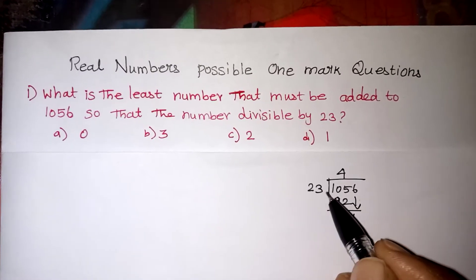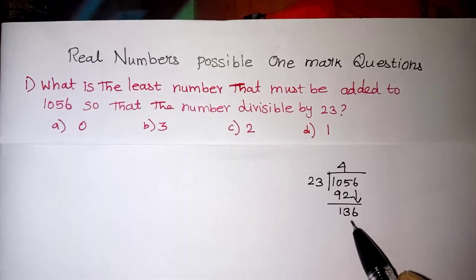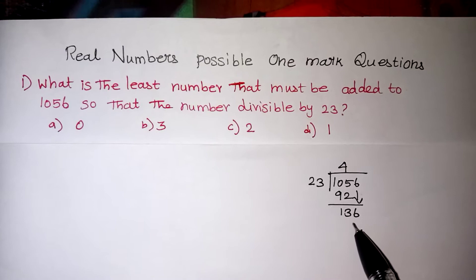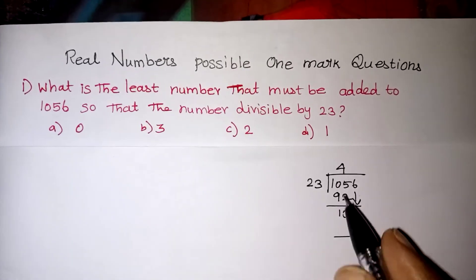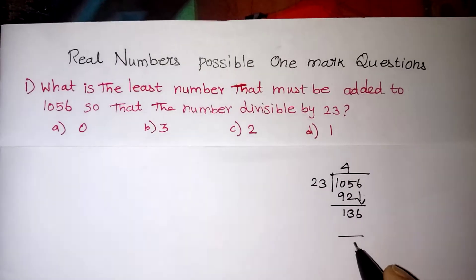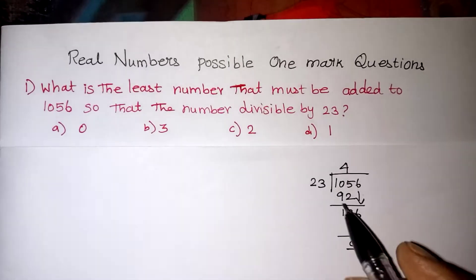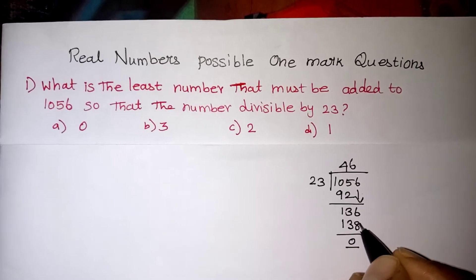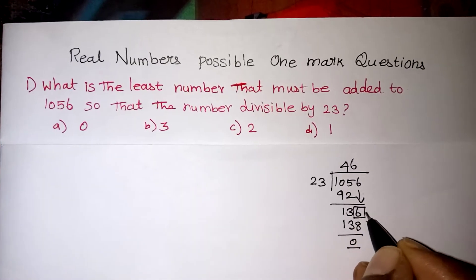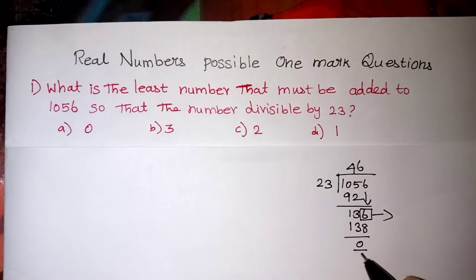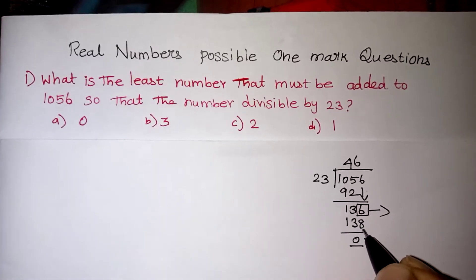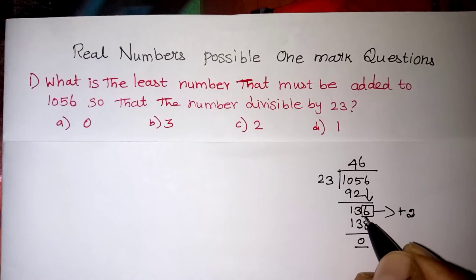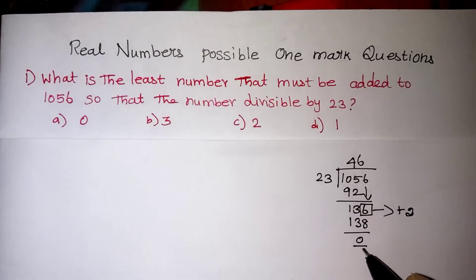After subtraction we get 13, then bring down the next digit 6, giving us 136. We need to make this number divisible by 23, so we need to reach remainder 0. The next multiple of 23 above 136 is 138, so 136 needs to become 138. Therefore we need to add 2 to reach 138, which is in the 23 times table.